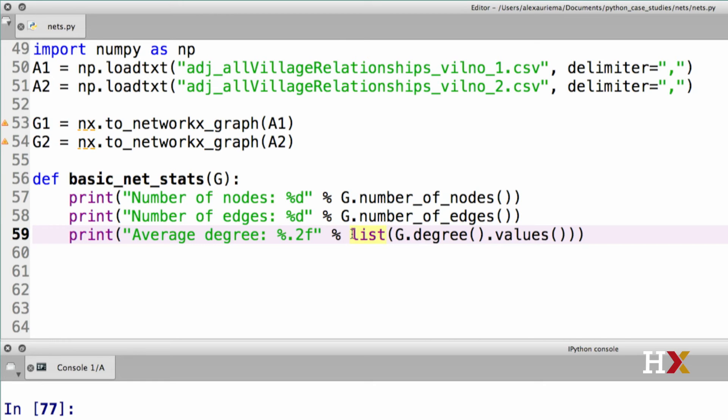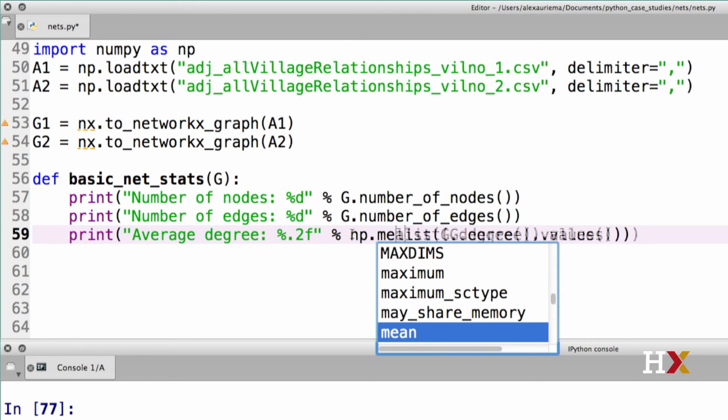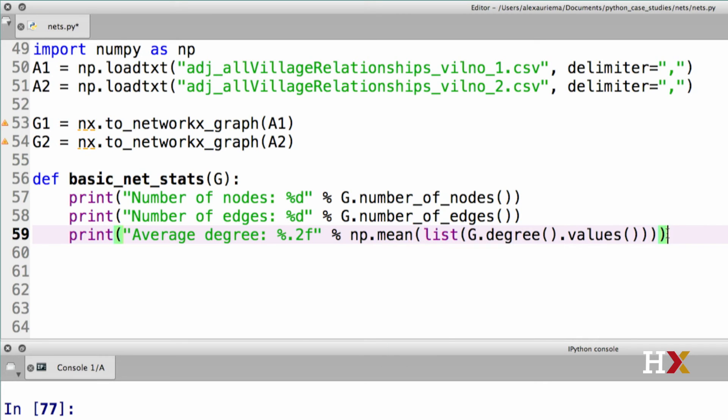And since we're printing out the average degree, we need to be sure to compute the average of the items on the list. We can then run the function.